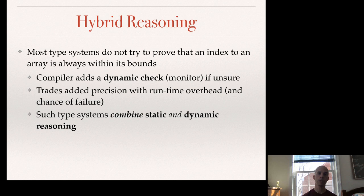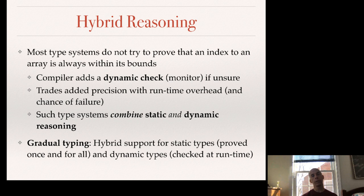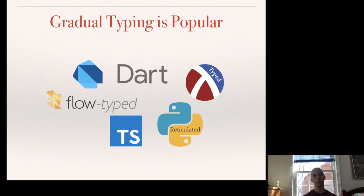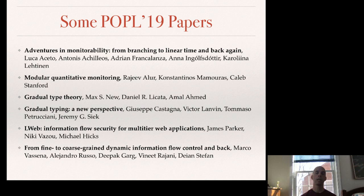This is a combination of static and dynamic reasoning. Recently there's been interest in other ways of combining them — in particular combining static and dynamic type systems. This area is called gradual or migratory typing, and it's gaining popularity, where languages that started as dynamically typed are getting type systems added on to them, adding value without subtracting from the precision of the original. There are a bunch of POPL-19 papers that involve gradual typing or runtime monitoring.